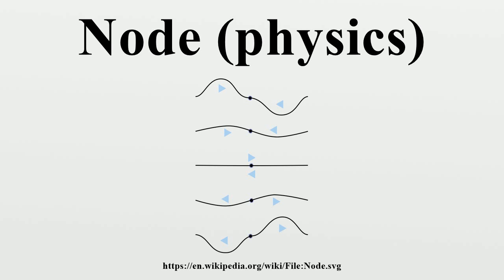Standing waves occur when waves are reflected at a boundary, such as sound waves reflected from a wall or electromagnetic waves reflected from the end of a transmission line, and particularly when waves are confined in a resonator at resonance, bouncing back and forth between two boundaries, such as in an organ pipe or guitar string.